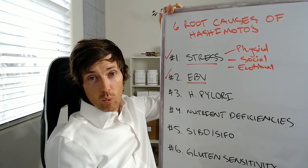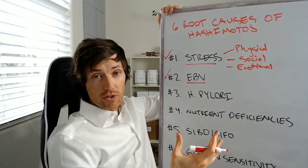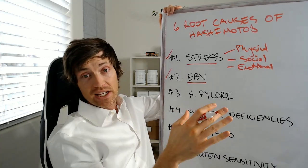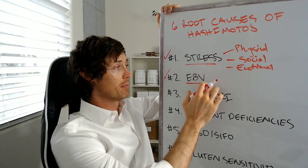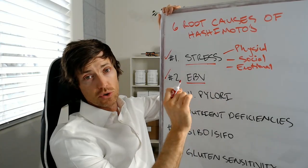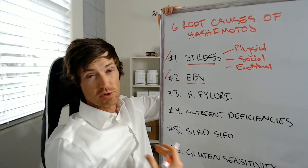The second one would be Epstein-Barr viral infection, otherwise known as EBV. Now, a lot of people are aware of this. And if you're not, I'll just briefly sort of introduce you to the idea. It's very well known that EBV can actually trigger many autoimmune diseases, including Hashimoto's thyroiditis. And in fact, I would say probably up there in terms of number one or number two, most important causes of Hashimoto's thyroiditis, just based off my own experience.